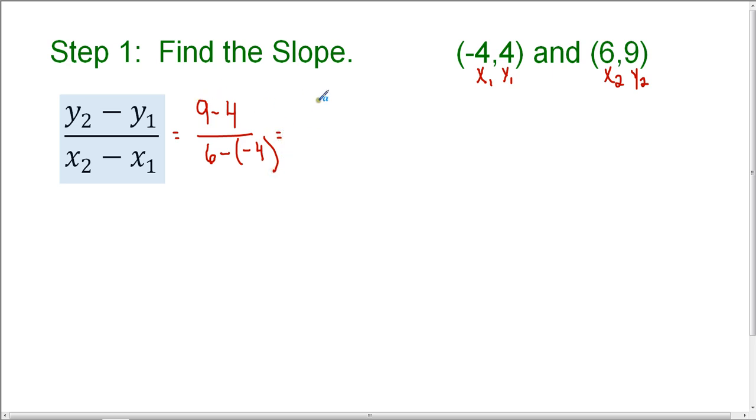So 9 minus 4 is 5, and 6 minus negative 4, remember that subtraction is adding the opposite, 6 minus negative 4, or 6 plus 4 is 10. So 5 tenths can be simplified to 1 half. So the slope for this equation is 1 half.